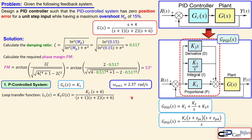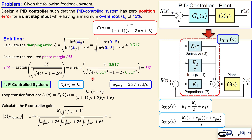Now we calculate the P controller gain K1, the only remaining unknown. We set the absolute value of the loop transfer function L1, evaluated in the j-omega domain at 2.37 radians per second, equal to 1. Solving this expression — K1 times the magnitude of the numerator divided by the three denominator magnitudes — at omega = 2.37 yields K1 = 11.07. This gain produces at least a 53-degree phase margin.